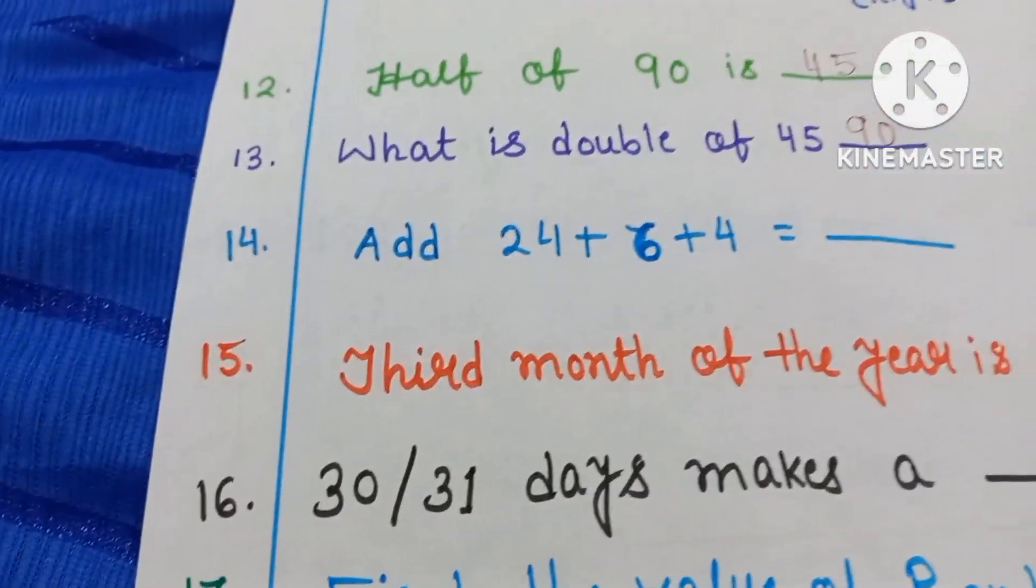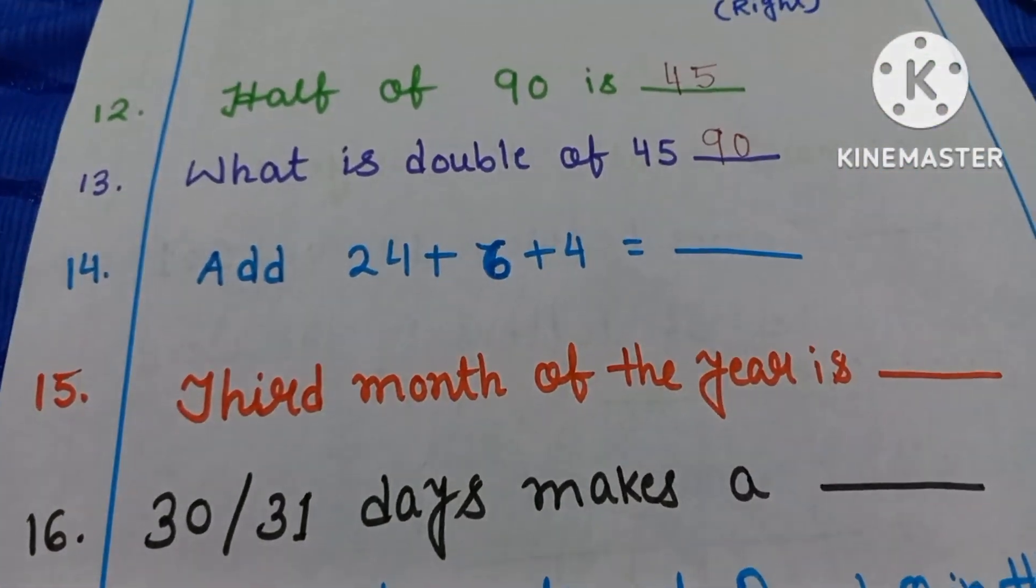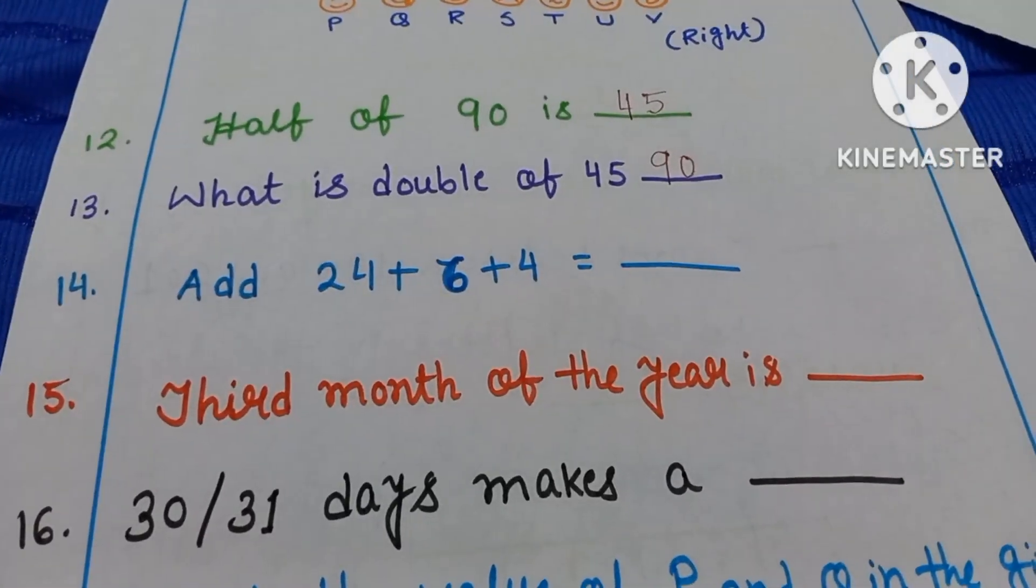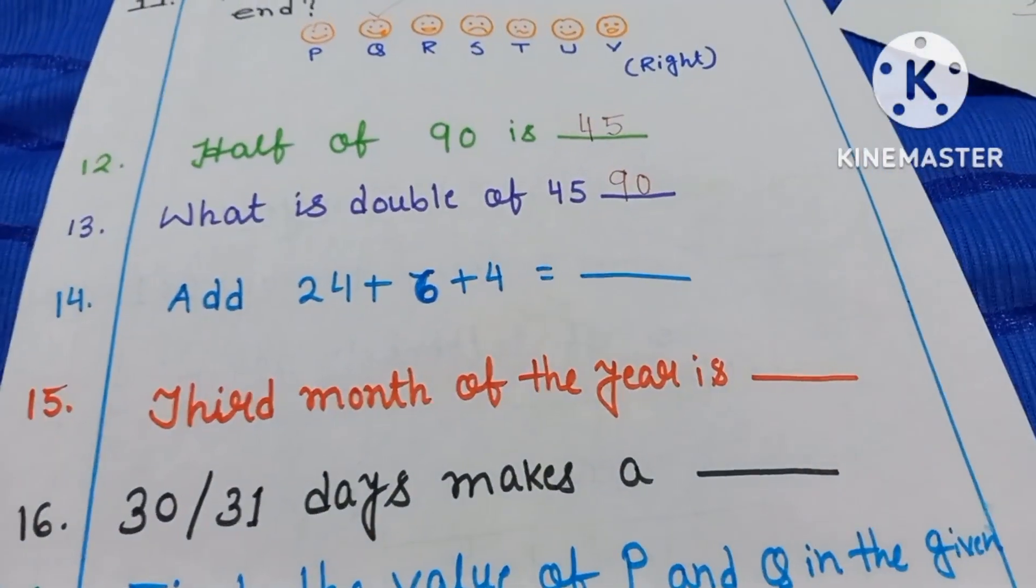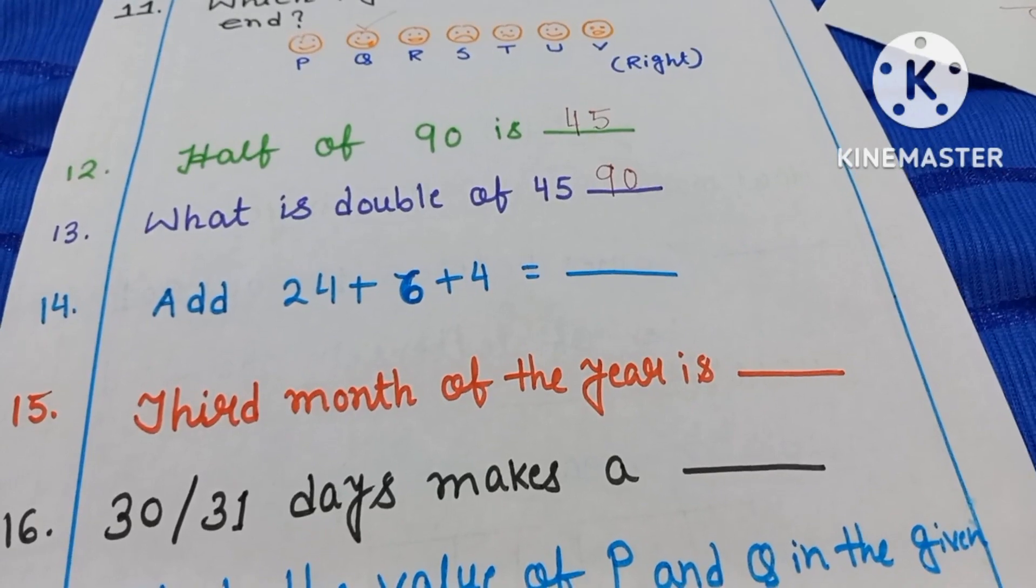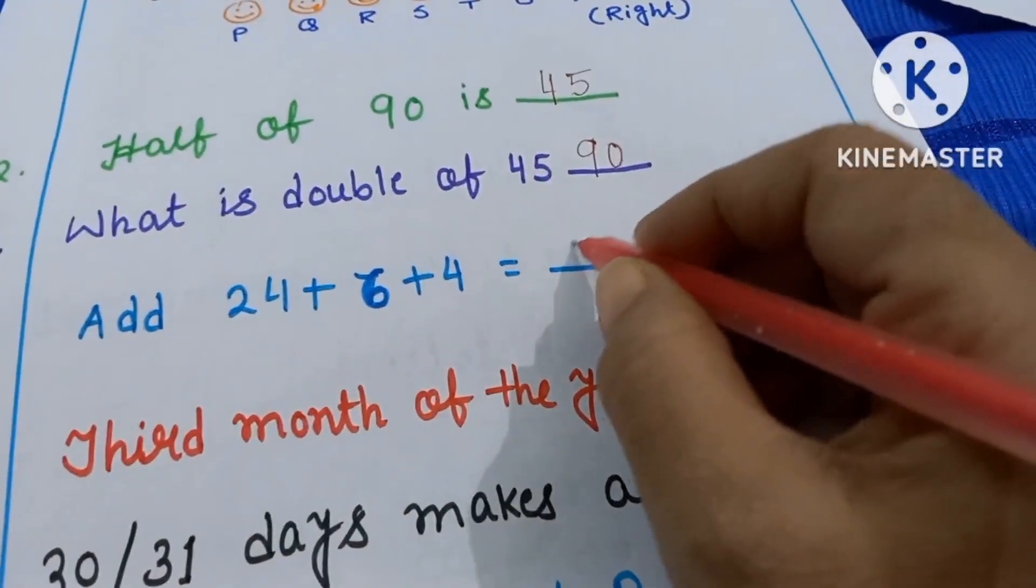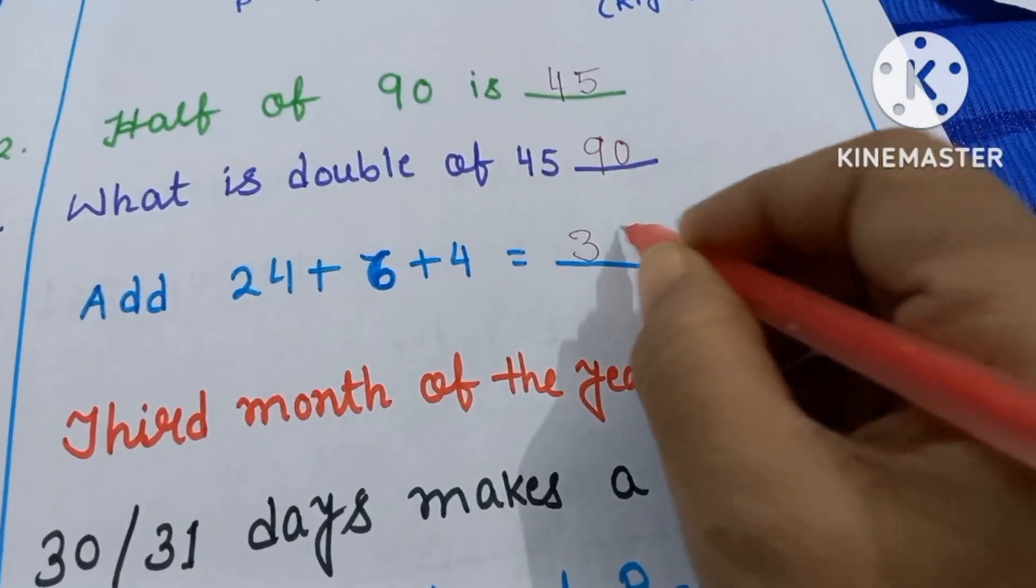Question number 14. Add 24 plus 6 plus 4. So 24 plus 6 is 30 and 30 plus 4, your answer will be 34.